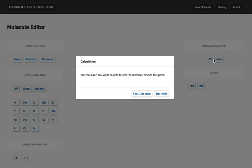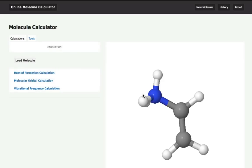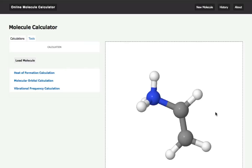I hit calculate here, yes I'm sure, and now it prepares the calculation. In this version of the Molecule Calculator 1.0, I have three options, three things I can calculate.